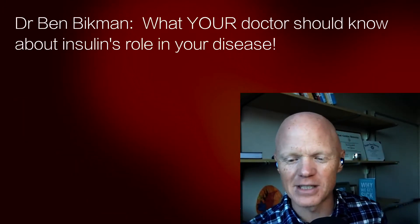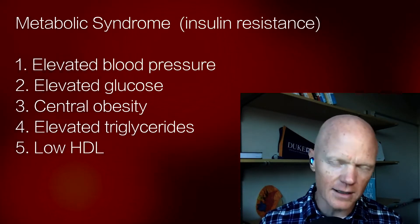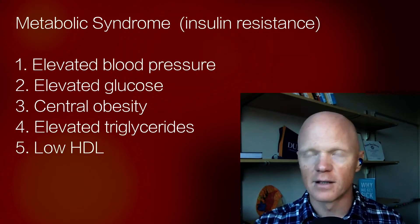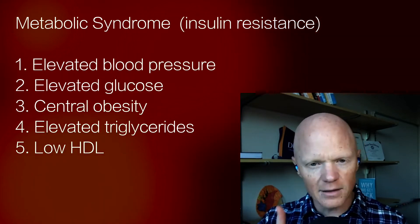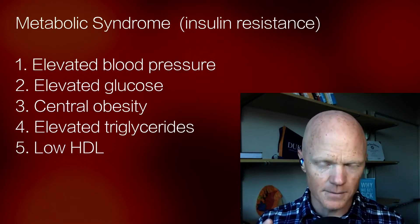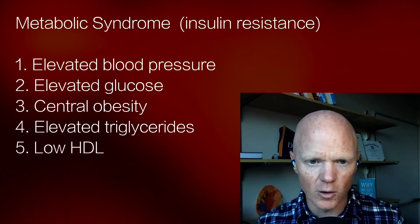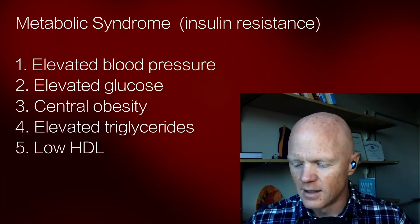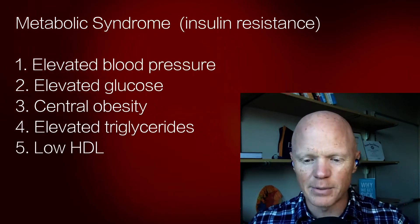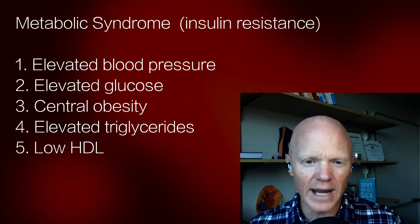Metabolic syndrome, as I mentioned, is a constellation of five disorders. Over the years there have been a few rolling definitions of it, but the consensus has settled on these five. One is elevated blood pressure — hypertension. Second, elevated glucose levels. Third, elevated waist circumference, so central obesity or adiposity. And then the fourth and fifth are related: bad blood lipids — specifically elevated triglycerides and low HDL.